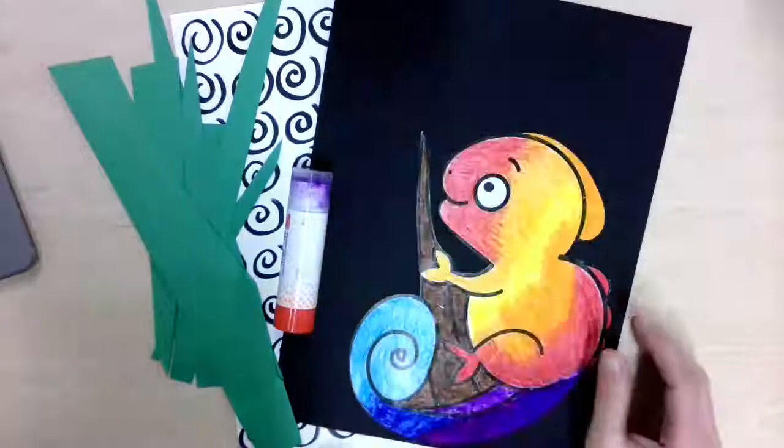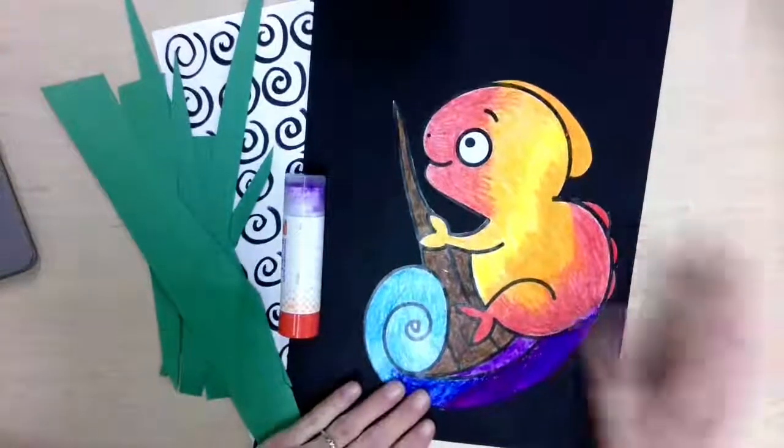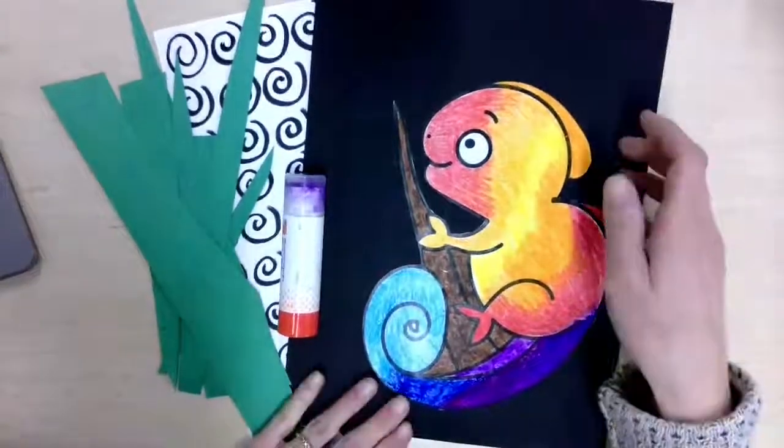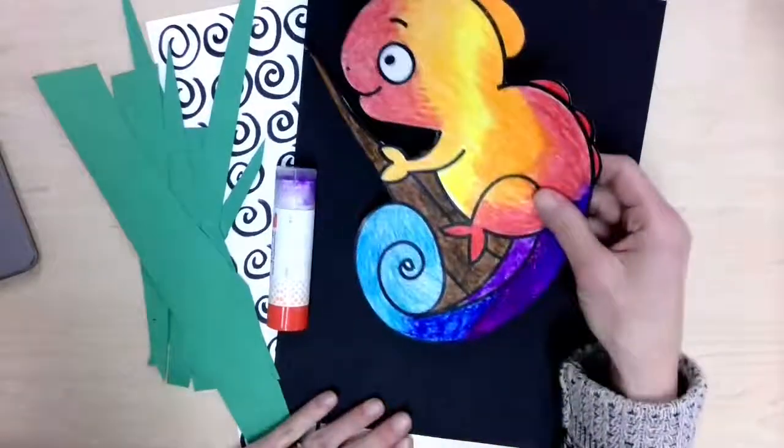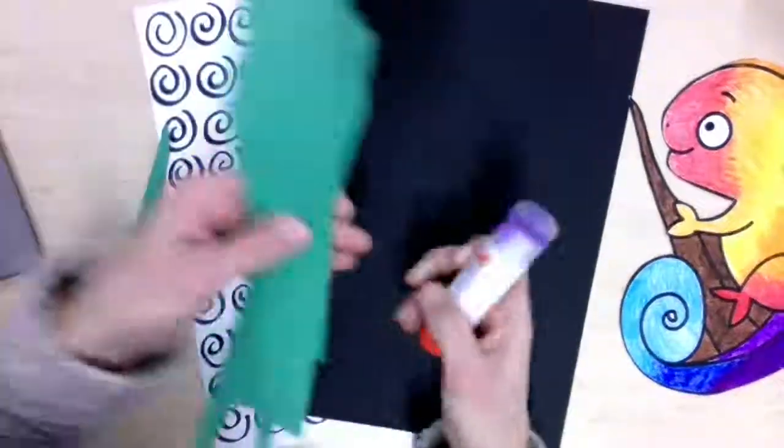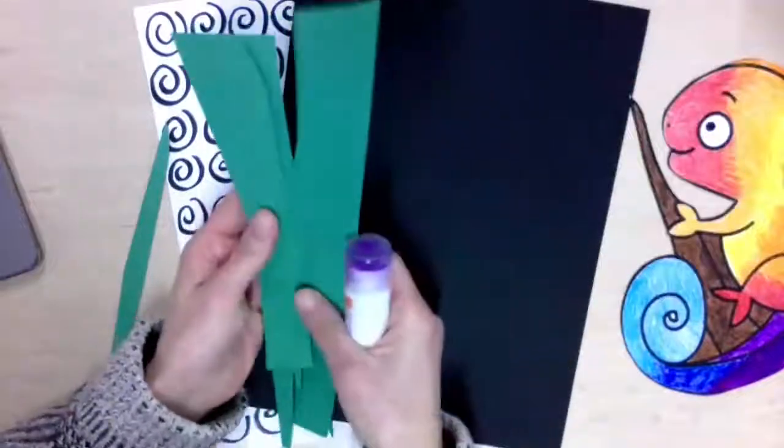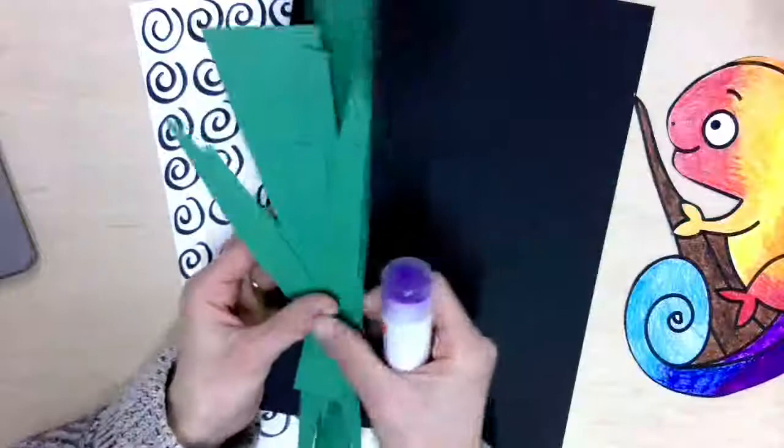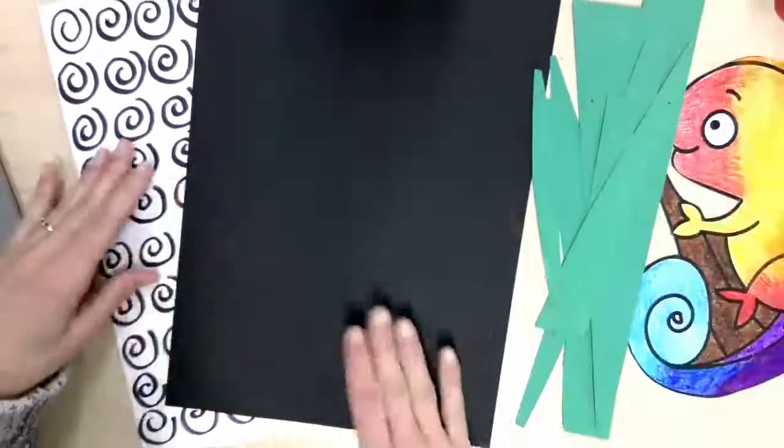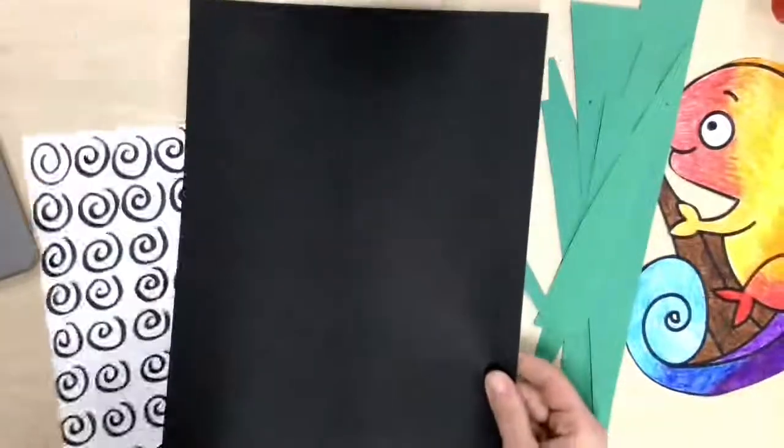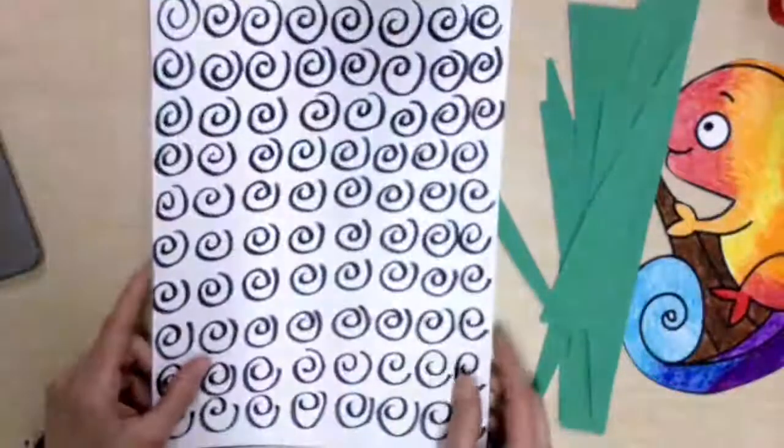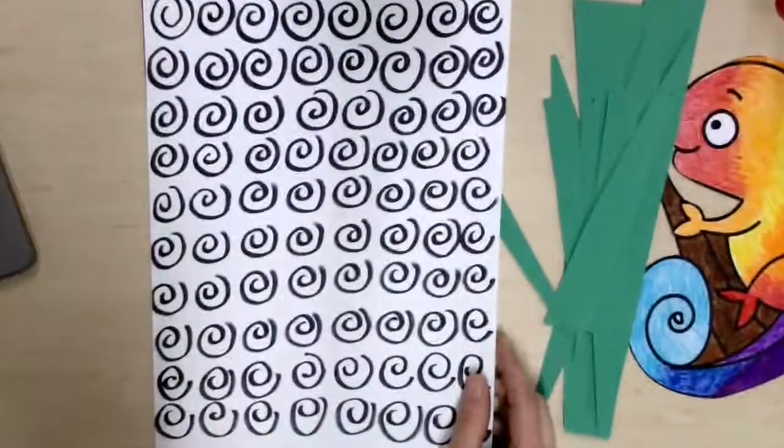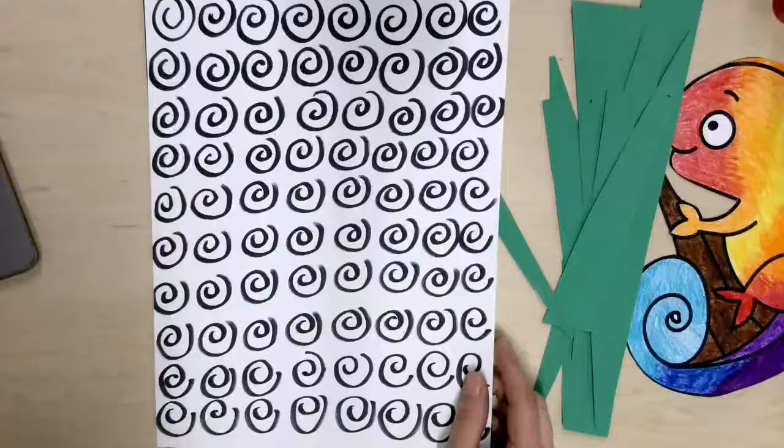Hi everybody, we are back with our chameleon project. What you're going to need is your cutout chameleon, the grass that you have cut out in different long triangular shapes, and a piece of black construction paper to display your chameleon, or you can create a small repetitive pattern on